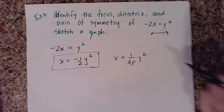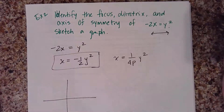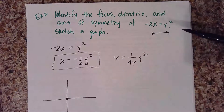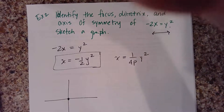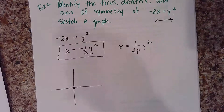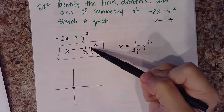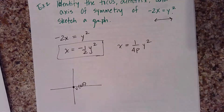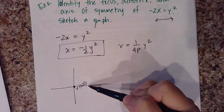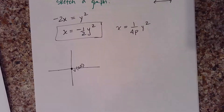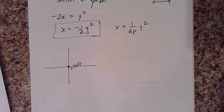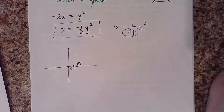So I now have my equation written in the correct format. This is a parabola that opens left and right because the y is being squared. The general formula for an equation that opens left and right is x equals 1 over 4p times y squared. To figure out our focus and all that, we need to know what that p-value is. The vertex is at (0, 0) because there is no h and k — nothing is being added to the function.